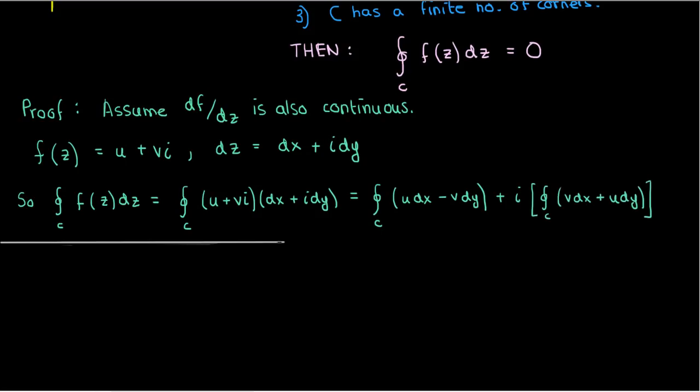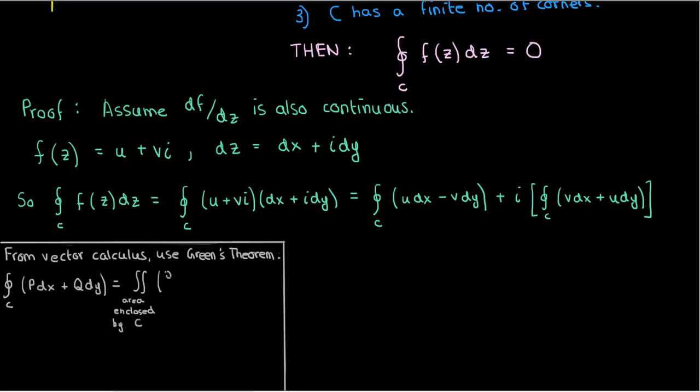And this is where we use a result from your glory days in vector calculus. That result is called Green's theorem, which says that the line integral along a simple closed curve of p dx and q dy equals the double integral over the region enclosed by the curve of dq/dx minus dp/dy, provided p and q are continuous and have continuous derivatives.